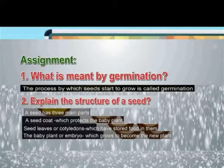Explain the structure of a seed. The seed has three main parts: the seed coat, which protects the baby plant; seed leaves or cotyledons, which have stored food in them; and the baby plant or embryo, which grows to become the new plant.